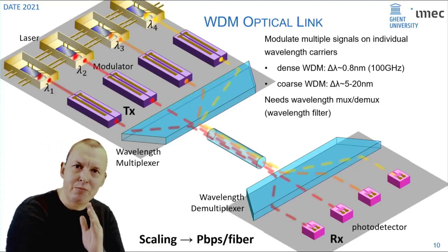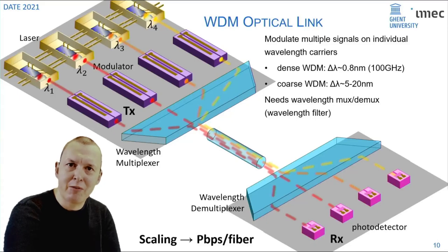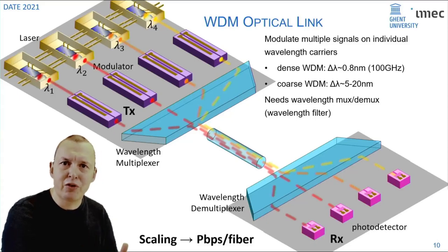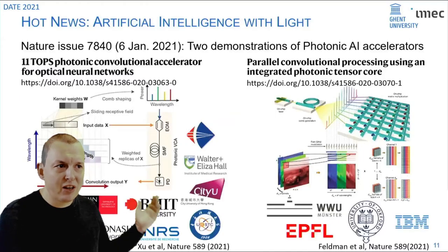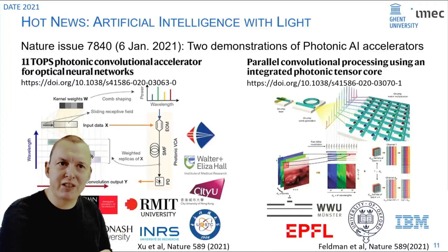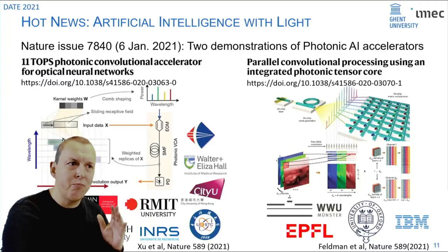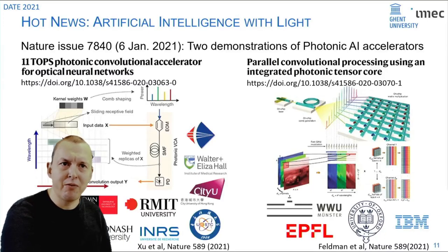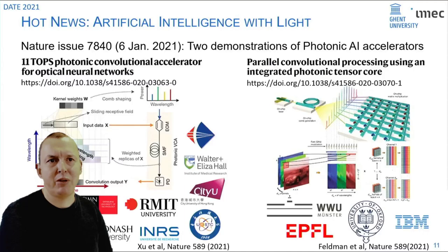This trick of wavelength division multiplexing allows us to scale the bandwidth of a fiber to tens of terabits per second, almost up to petabits per second. The same trick can also be leveraged for computing. For instance last month there were two publications in the same issue of Nature which built an optical convolution processor to calculate convolutions in real time using wavelength division multiplexing.